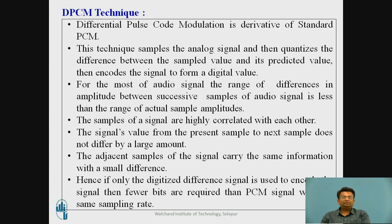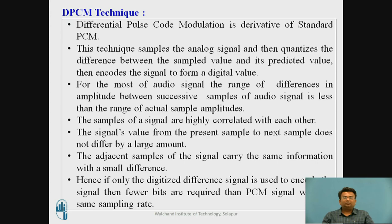Differential Pulse-Coded Modulation (DPCM) is a derivative standard of PCM. This technique samples the analog signal, then quantizes the difference between the sampled value and its predicted value, then encodes the signal to form the digital value. For most audio signals, the range of differences in amplitude between successive samples is less than the range of actual sample amplitude. The samples of the signal are highly correlated with each other.